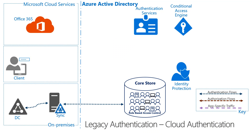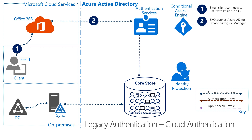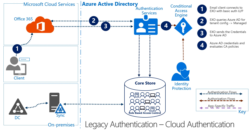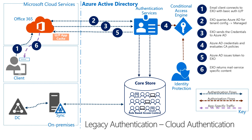We start with a user launching an Office 365 application — again, in this case we'll use Outlook 2010 and Exchange Online. The initial request goes to Exchange Online. Exchange Online then calls Azure Active Directory for the tenant configuration, which then verifies it's managed. The user is then prompted for their username and password through basic authentication. Exchange then sends their credentials to Azure AD for verification, as illustrated here in Step 3. Like federated authentication, the user is then evaluated against conditional access and identity protection policies for authorization. Upon completion of authorization, Azure AD issues the token back to Exchange Online, which in turn allows access to the email for the requesting user.